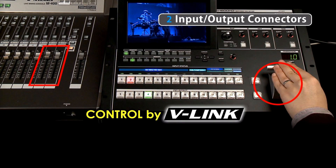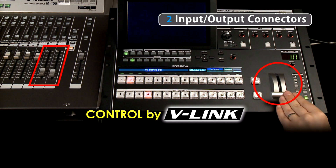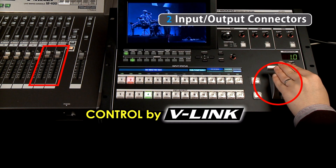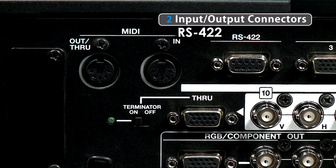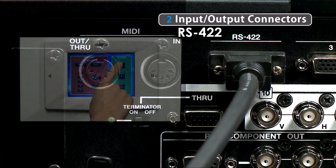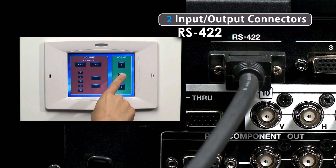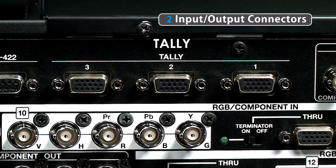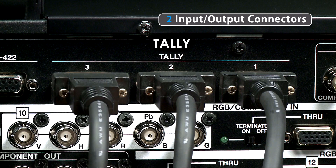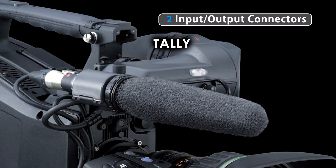Also, associating a stereo audio channel on a vMixer digital console with a video channel so that when you go live with that video source, the audio level is automatically raised at the same time. At the top, we have the RS422 jack which allows integration with external controllers such as in-wall touch panels. These tele connectors here enable integration with camera systems.